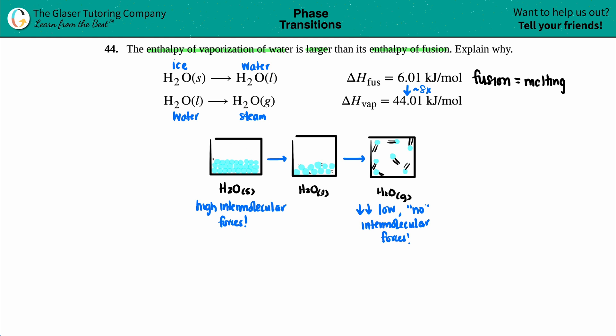So to go from a solid to a liquid only requires 6.01 kilojoules, as opposed to the eightfold, almost a little bit more than eightfold difference of 44.01 kilojoules per one mole. And we can kind of see the difference as to why in the pictures.